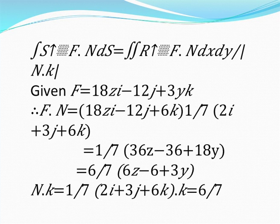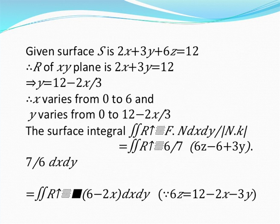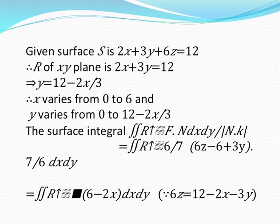Let r be the projection of s on the xy plane. Then f·n equals (1/7)(36z minus 36 plus 18y), which simplifies to (6/7)(6z minus 6 plus 3y). The projection of the given surface on the xy plane is 2x plus 3y equals 12, giving y equals (12 minus 2x)/3. So x varies from 0 to 6 and y varies from 0 to (12 minus 2x)/3. The surface integral equals the double integral over region r of (6/7)(6z minus 6 plus 3y) times (7/6) dx dy, which simplifies to the double integral over r of (6 minus 2x) dx dy.